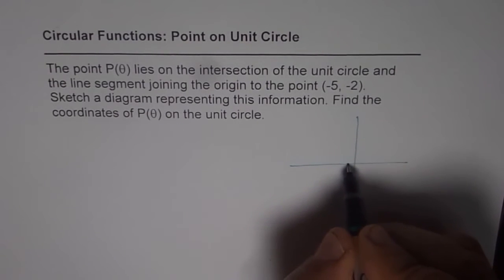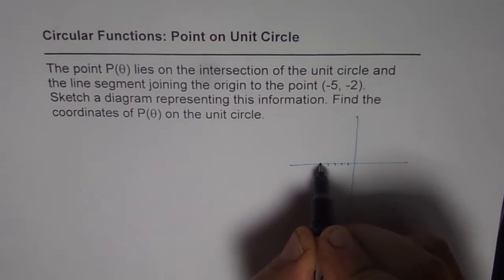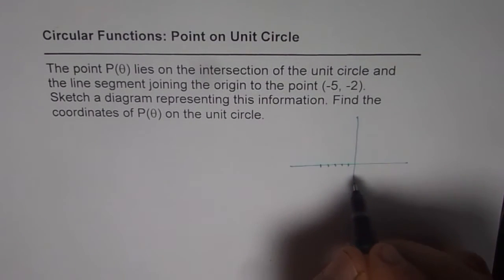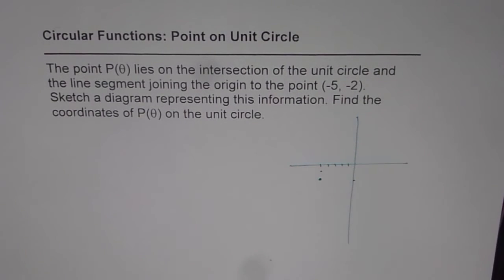So let's say -1, -2, -3, -4, -5 and -2 will go down 1 and 2. So that is -2. So this is the point (-5, -2) for us.